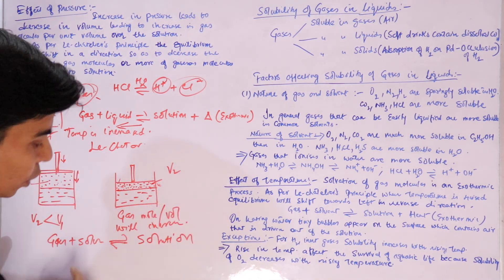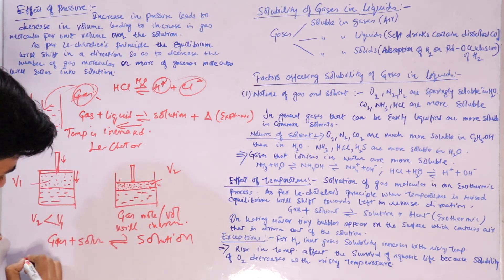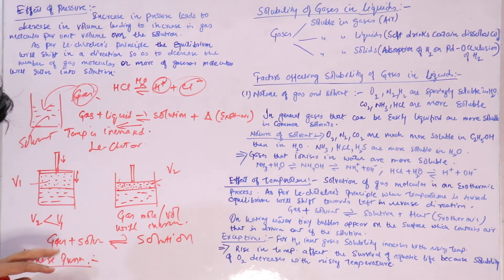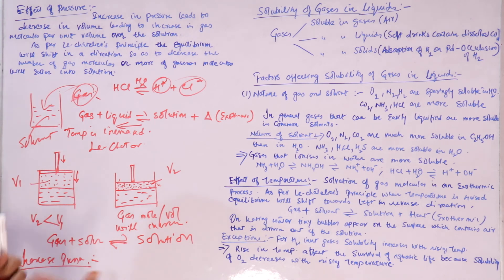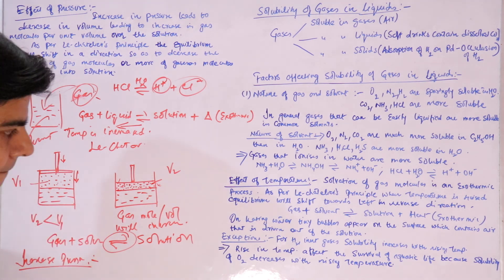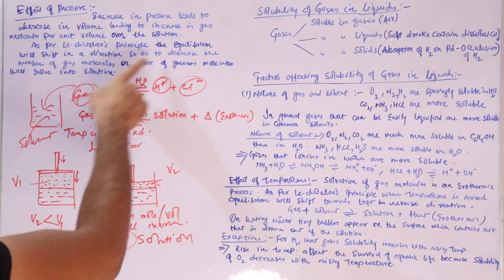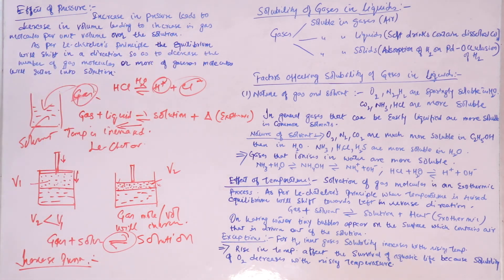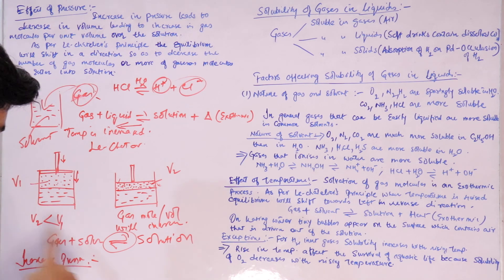As per Le Chatelier's principle, with temperature remaining constant, if you increase pressure, the equilibrium will shift in a direction where pressure decreases — that is, where the number of gas molecules in the gas phase decreases. More gas molecules will enter the solution, which decreases the pressure. Therefore, increasing pressure increases the solubility of gas in liquid, consistent with Le Chatelier's principle.